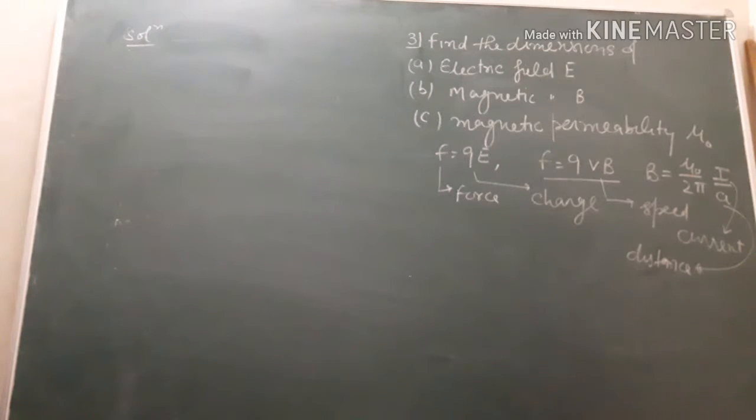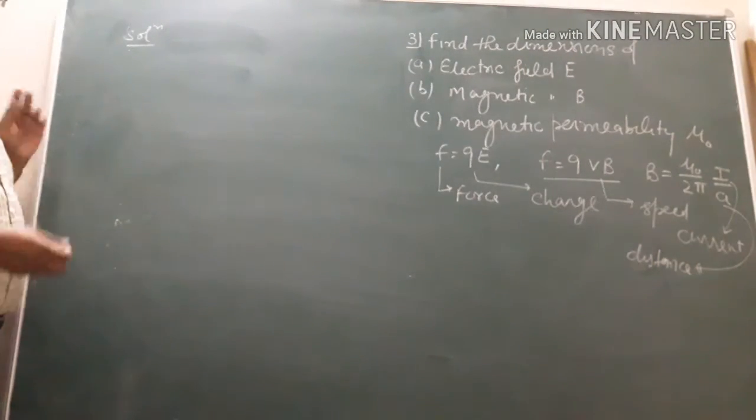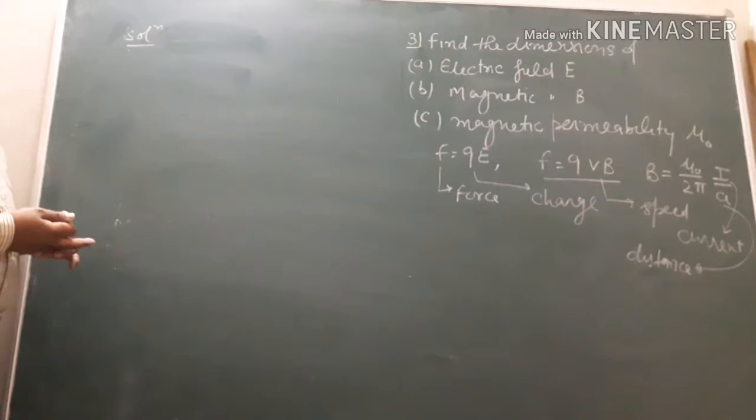Question number three: find the dimensions of electrical field, magnetic field, and magnetic permeability mu naught. We should know the formula and the dimension of electrical field.